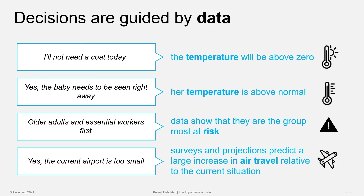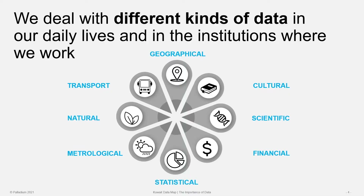Decisions are guided by data. When we decide whether or not to wear a coat, we do that on the basis of knowing what the weather is and particularly what the temperature is — is it going to be too cold or too hot? Taking the baby to the doctor requires knowing whether he or she has a temperature. Knowing who to vaccinate against pandemics such as COVID-19 requires research and data on which population groups are the most vulnerable. And building an airport requires knowing what the current traffic flow is and what it's going to be in the future.